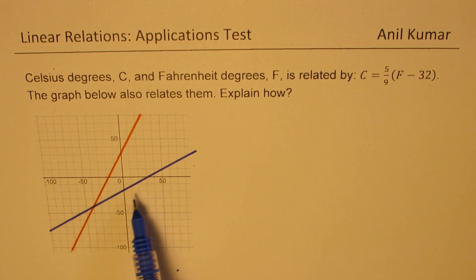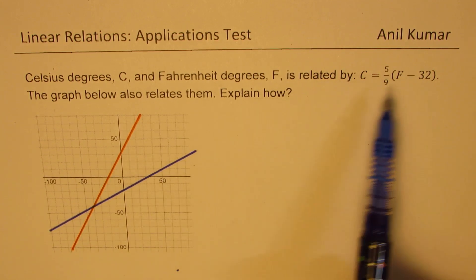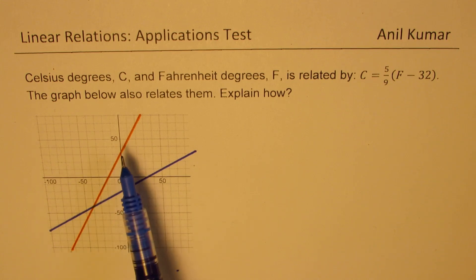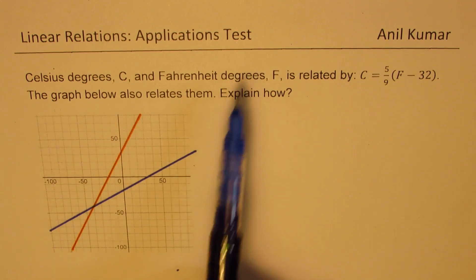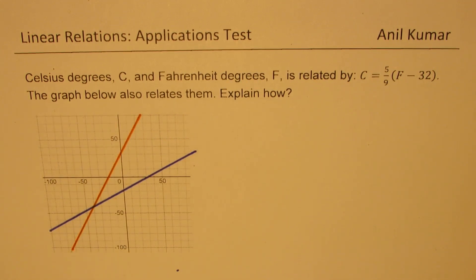Here is a graph which also relates both these temperatures, and one can use the graph to convert one from the other. The question here is, the graph below also relates them. Explain how. That is what you need to do. You need to explain which graph is for what, and how can we use this graph to convert from degree Celsius to Fahrenheit or from Fahrenheit to Celsius. You can always pause the video, answer the question, and then look into my suggestions.